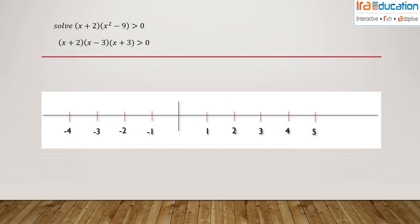Hi, in this series of discussions on inequalities, we are solving one more problem. The problem is (x + 2)(x² - 9) > 0. I can simplify this problem using algebraic identities.